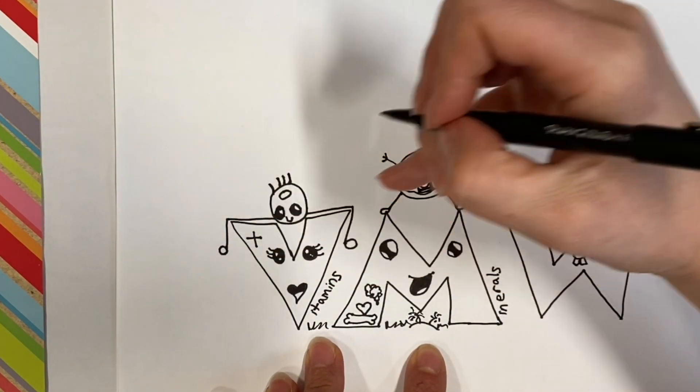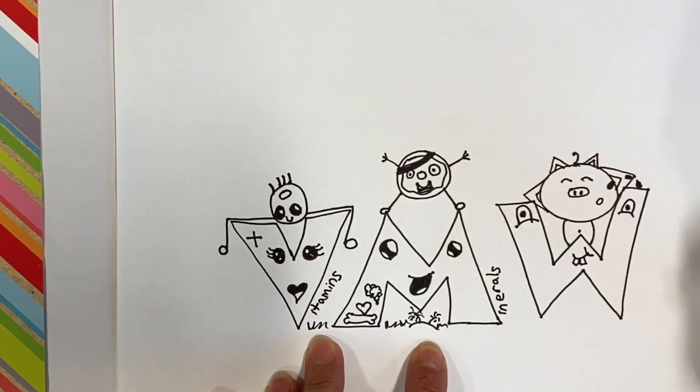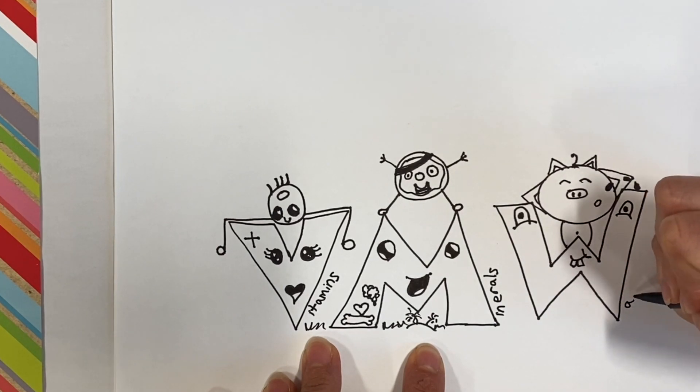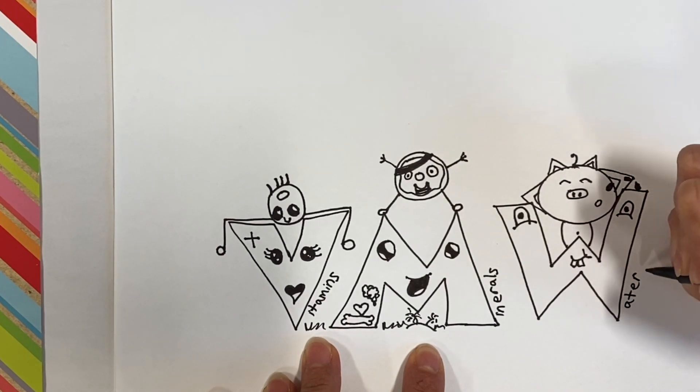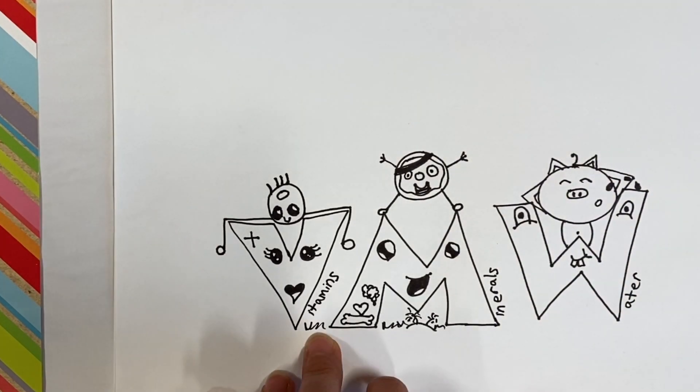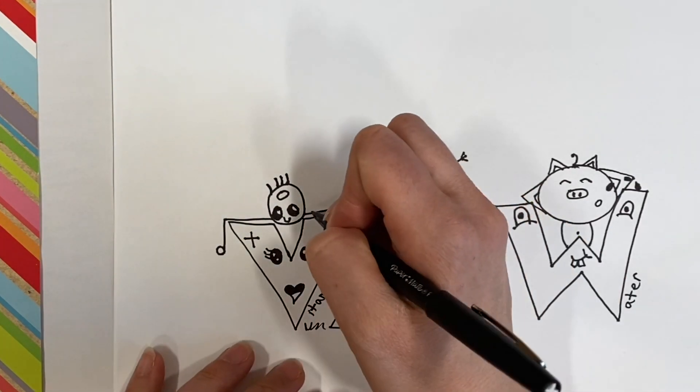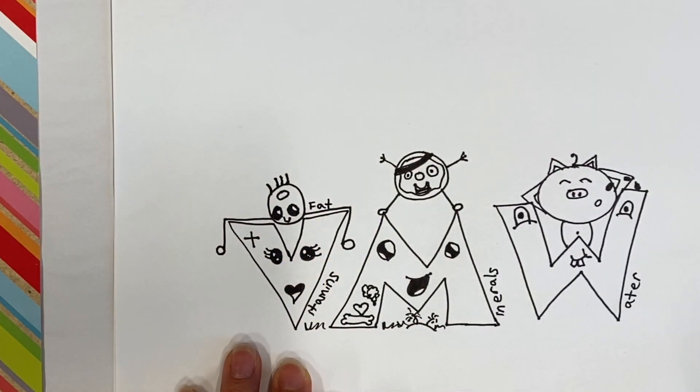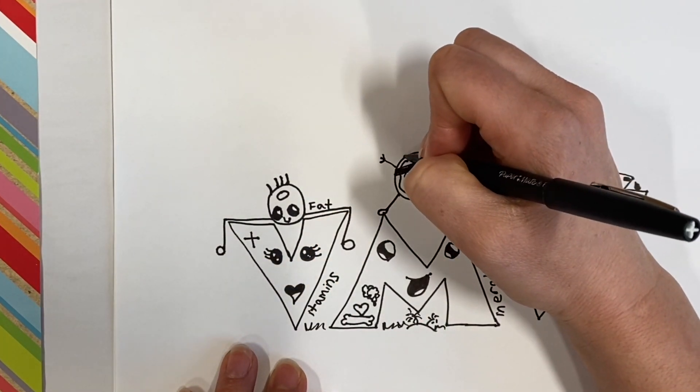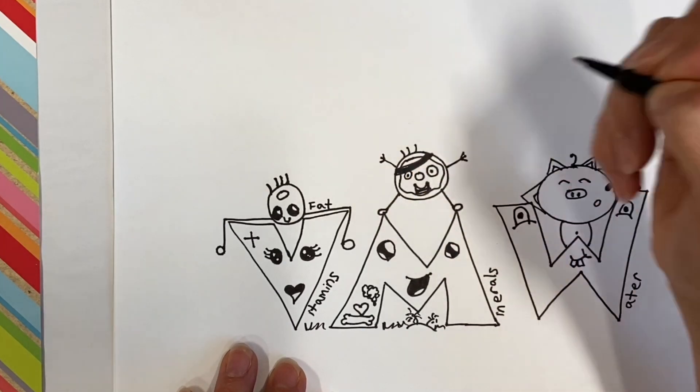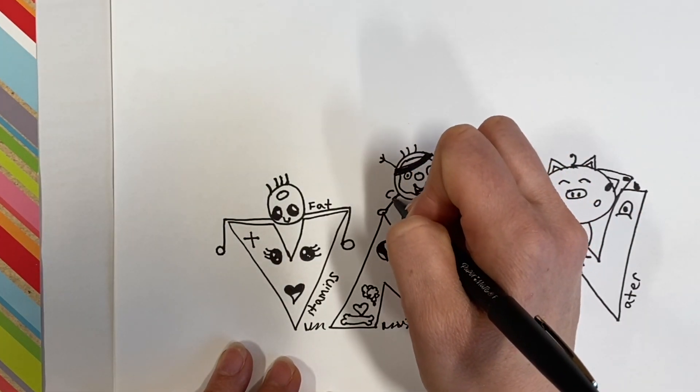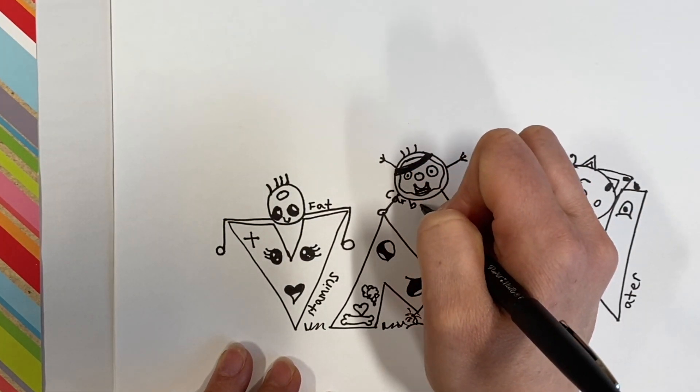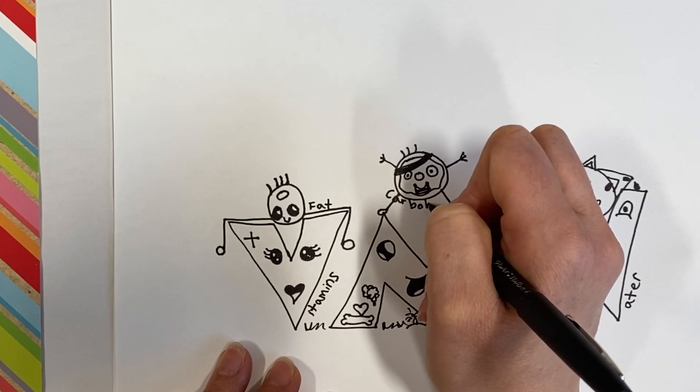The ones up here, fat, carbohydrates, and protein all provide energy. So those are our macronutrients. And they provide us energy. We have our fat here. We have our carbohydrate. I forgot to add three little hairs. We have sugar, fiber, and starch. And our carbohydrates.